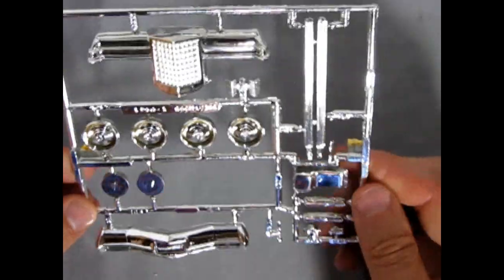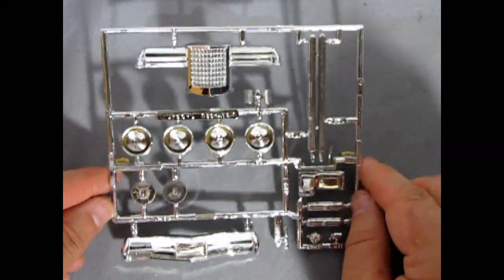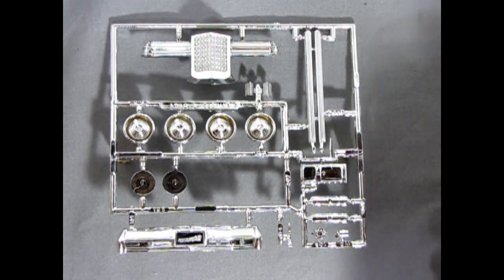But again, it doesn't really affect the front too much. A little bit of yellow showing through on the wheels. That's kind of a shame. But overall, I mean, the detail is crisp, but the chrome could be better.